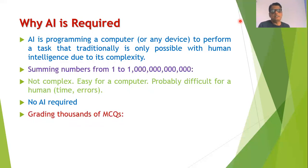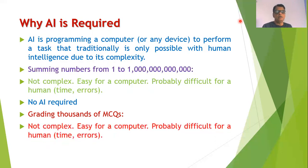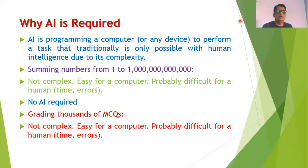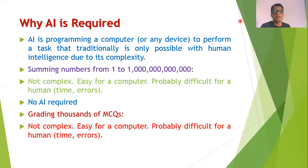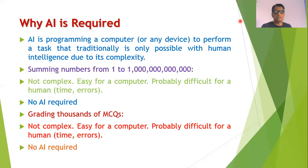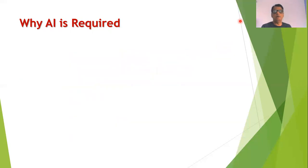Now consider another example. Suppose you are given thousands of MCQ answer sheets and asked to grade them. This is not a complex task — it is a simple task. A computer can easily check such MCQ answer sheets with a simple program. But if you ask a human being, it is very difficult and time-consuming, and errors may occur. In this task also, no AI is required.